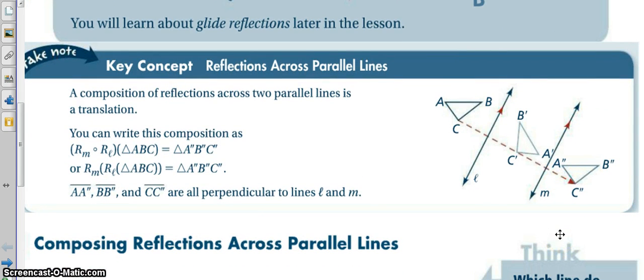And then we've got reflections across parallel lines. So, if I reflect ABC to A'B'C' but then I reflect it again, my double prime shape ends up facing the exact same direction as my original shape because when I flip something twice, it ends up just like it was originally.